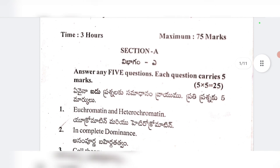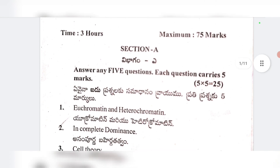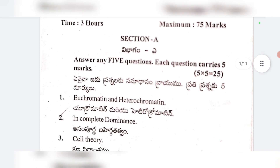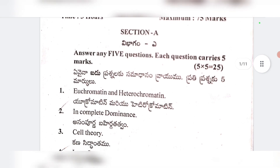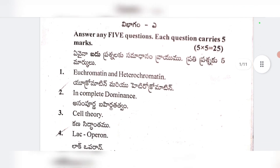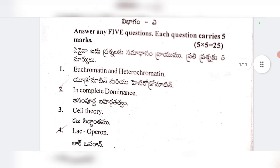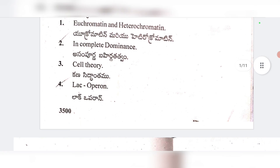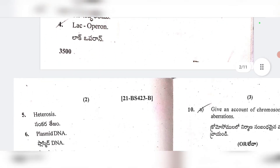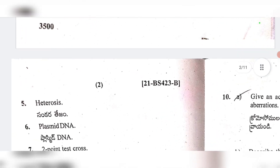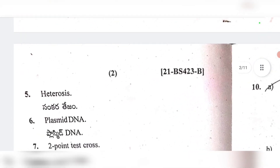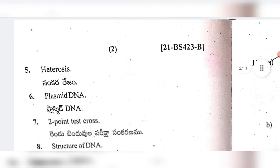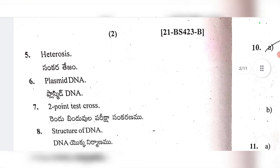2nd: Incomplete Dominance (Asampurna Bahirgatatvam). 3rd: Cell Theory (Kana Siddhantham). 4th: Lac Operon. 5th: Heterosis. 6th: Plasmid DNA. 7th: Two-Point Test Cross. 8th: Structure of DNA.